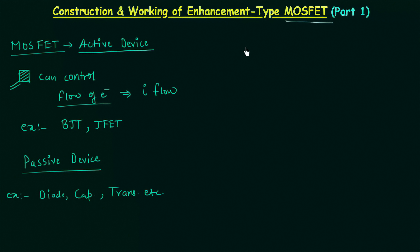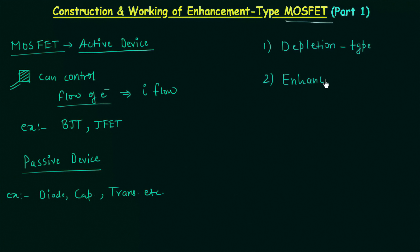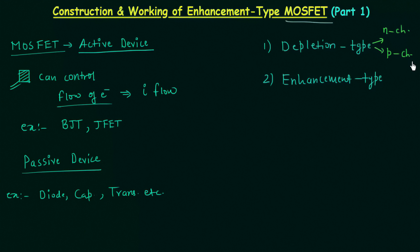Now we will move to the classification of MOSFET. MOSFET is classified into two types: the first one is depletion type MOSFET and the second one is enhancement type MOSFET. Depletion type MOSFET can be classified as N channel depletion type and P channel depletion type. Similarly, enhancement type MOSFET can be classified as N channel enhancement type and P channel enhancement type MOSFET.